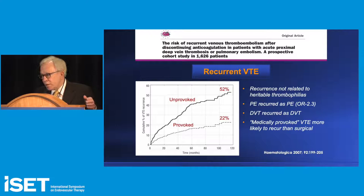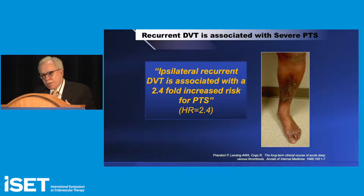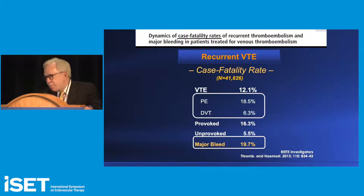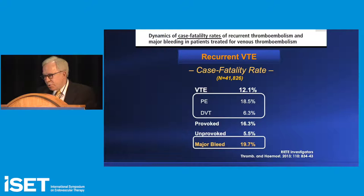PE generally presents as recurrent PE, and recurrent DVT — obviously the initial event was DVT most of the time. Medical provocation carries a much higher risk of recurrence than surgical provocation, and if recurrent DVT is in the ipsilateral limb, there's a significant increase in the severity of post-thrombotic syndrome. The Riete investigators, in a database of over 41,000 patients, demonstrated case fatality for recurrent PE was over 18%, and recurrent DVT 6.3%.